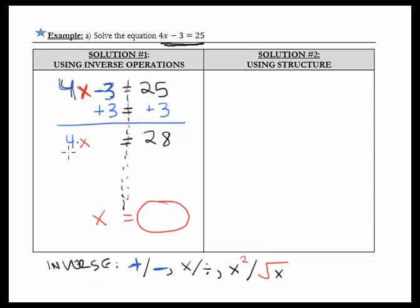So we want to get rid of that 4. Well, multiplication, we get rid of multiplication by dividing. So let's divide by 4, divide both sides by 4.